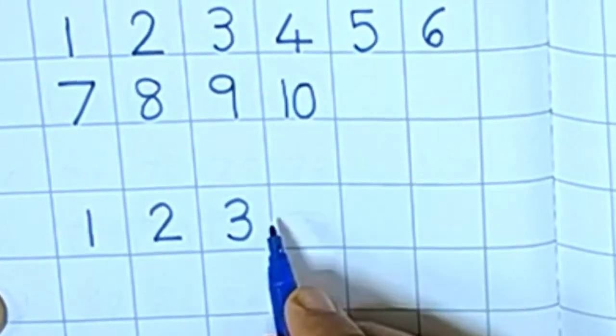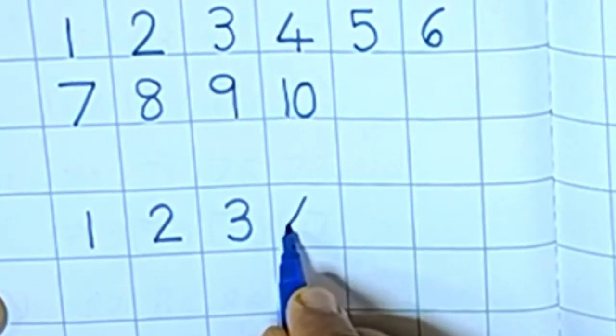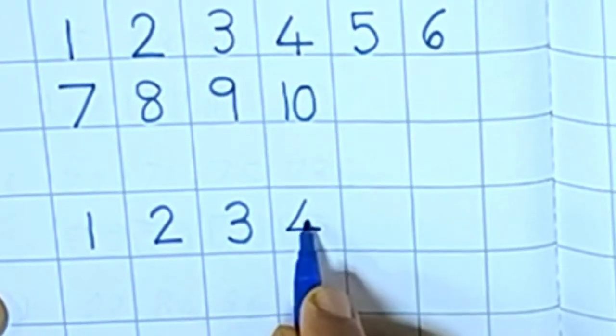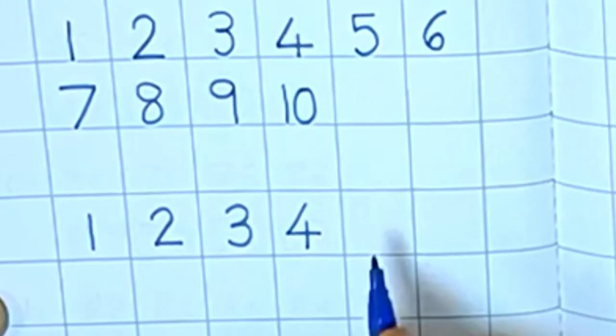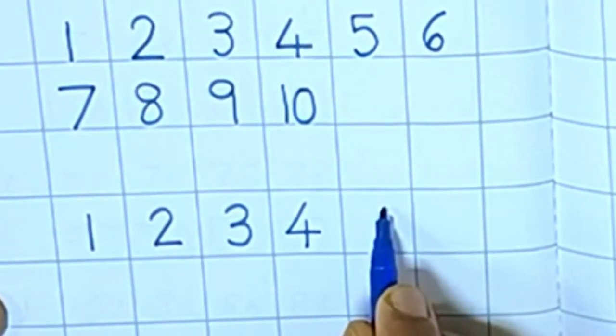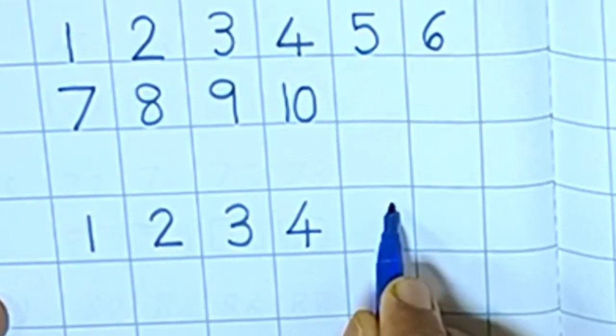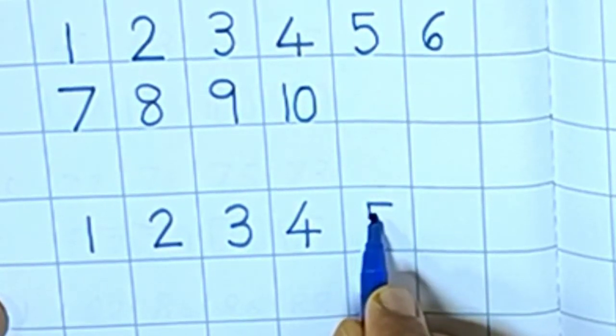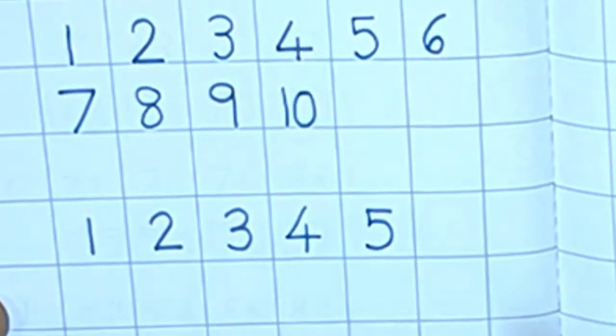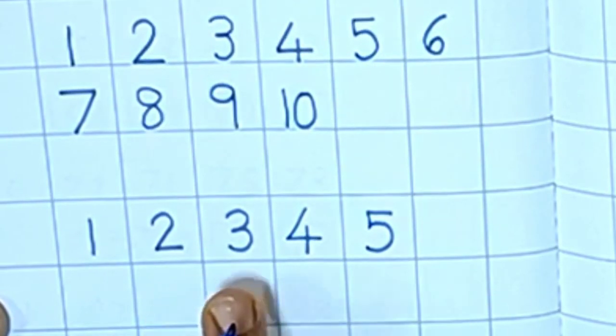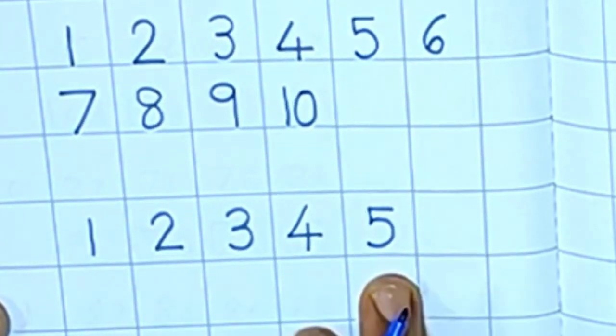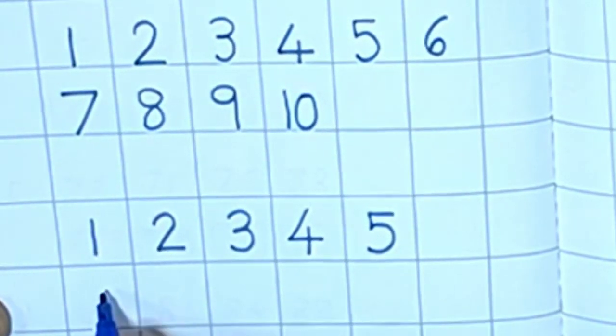Number 4, slanting, sleeping, standing line. Number 5, sleeping line, then standing line, and a curve. Number 5. We finish up to 5.